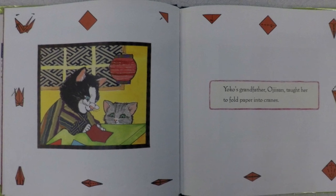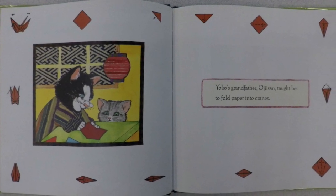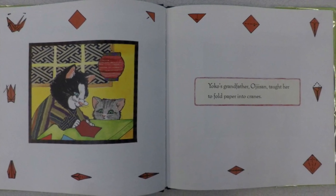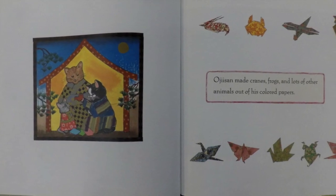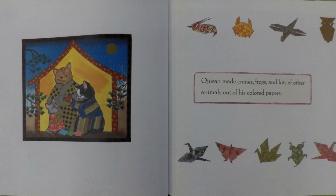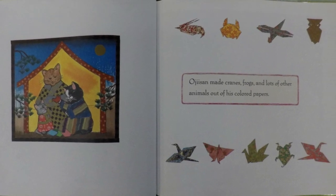Yoko's grandfather, Oji-san, taught her to fold paper into cranes. Oji-san made cranes, frogs, and lots of other animals out of his colored papers.